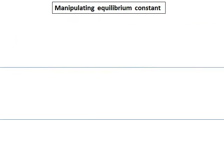We will learn about how to manipulate the equilibrium constant. What this means is: given a reaction with a particular equilibrium constant, if I change the reaction, how will the equilibrium constant change? That is what we are going to learn.